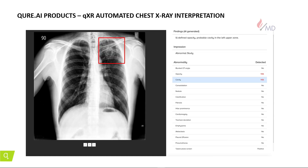I'll quickly talk about the products. We have a chest X-ray interpretation product, which can basically identify normal and abnormal X-rays, and it can detect 20 different kinds of abnormalities, including tuberculosis screening.